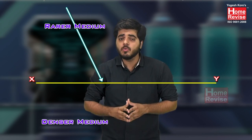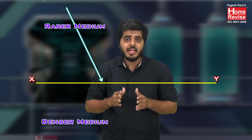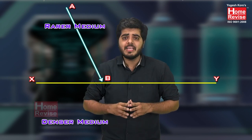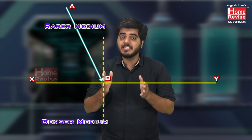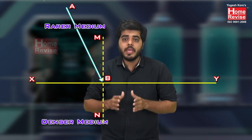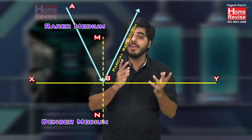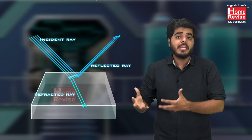A ray of light coming and striking surface XY is called the incident ray — let us name it AB. At point B where it strikes the surface, I draw a line perpendicular to the surface called the normal, named MN. Whenever a ray of light strikes a surface, it suffers partial reflection and partial refraction — meaning some light reflects back and some refracts through.